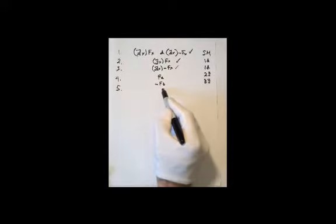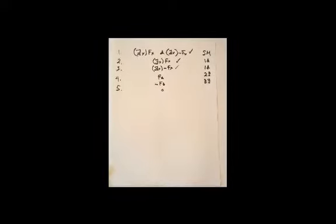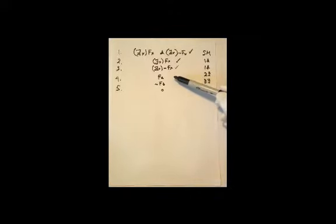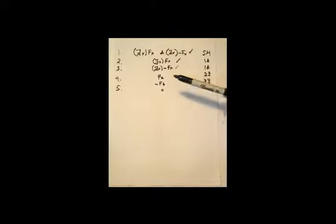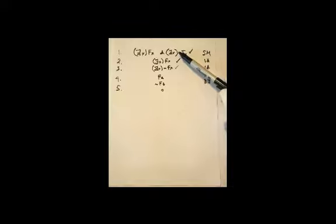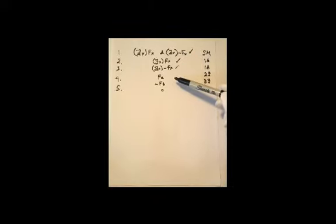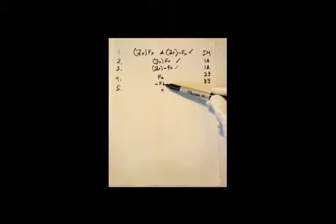What we have here is a completed open branch. If we reflect on what it's telling us: the sentences at the top of the tree can be true if 'a' is friendly — say 'a' is Alice — and 'b' is not friendly. Then it really will be true that someone is friendly and someone is not friendly.